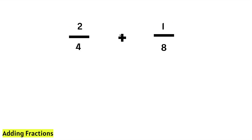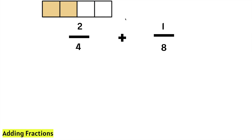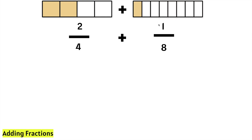Let's add 2 fourths plus 1 eighth. We have 2 out of 4, and we are adding 1 out of 8, or 1 eighth. We notice that these fractions have unlike denominators. Can we convert 2 fourths into eighths so we can have common denominators? We can do that by multiplying.